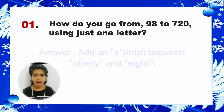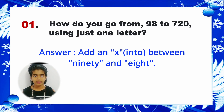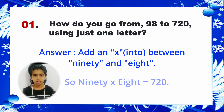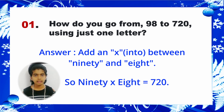Answer: Add an 'into' (×) between 90 and 8. So, 90 into 8 is equal to 720.